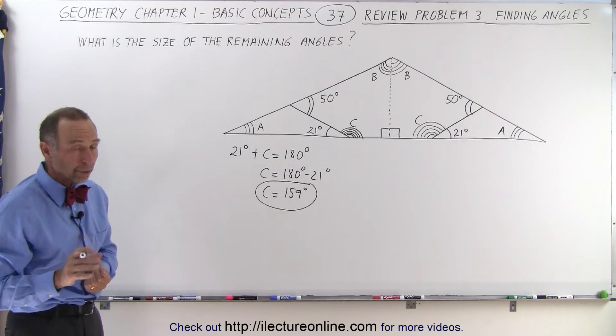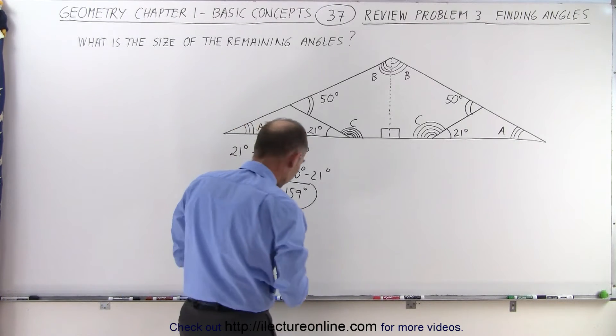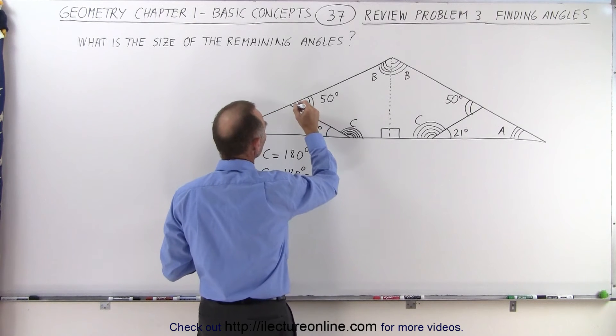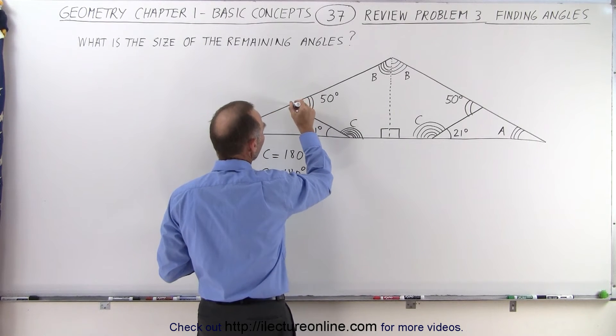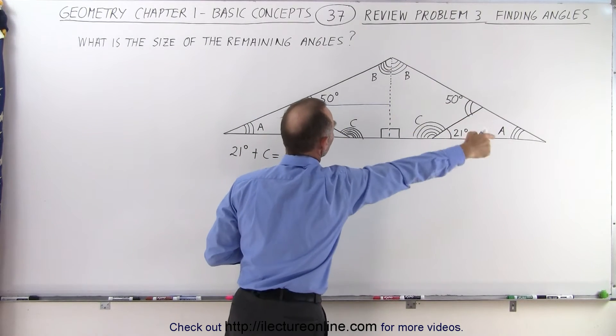Now the next two are a little bit more difficult to find. Sometimes it helps to subdivide an angle. We can draw a line that's parallel to the base of this big triangle right here.